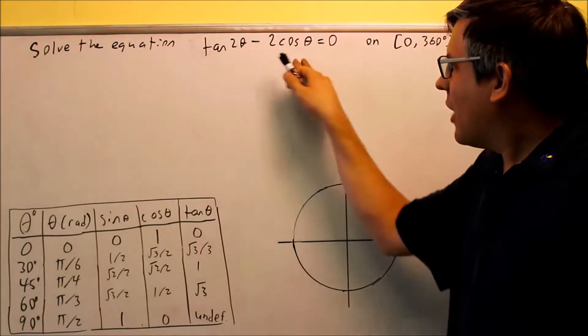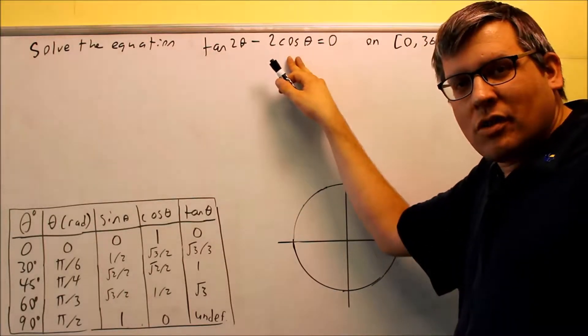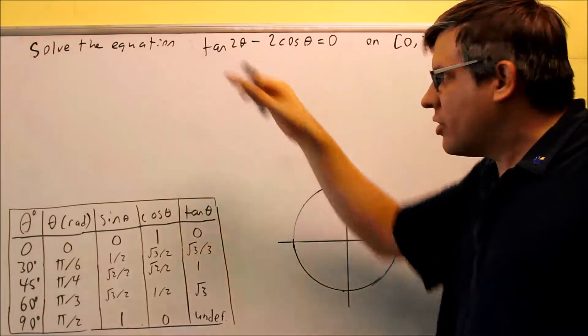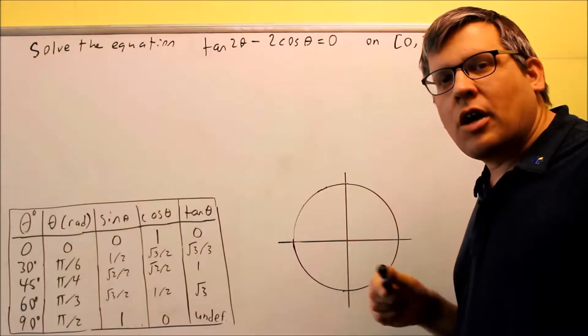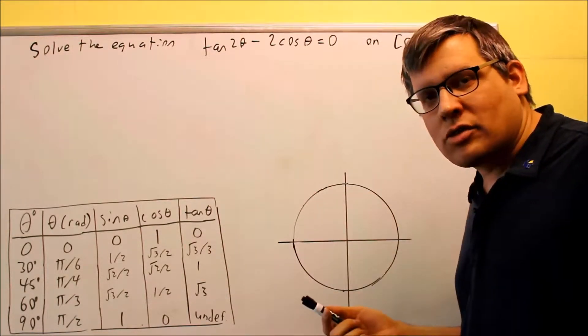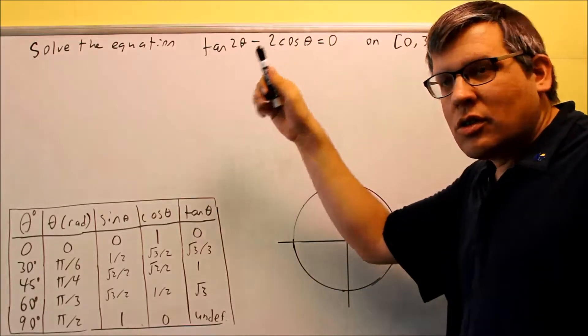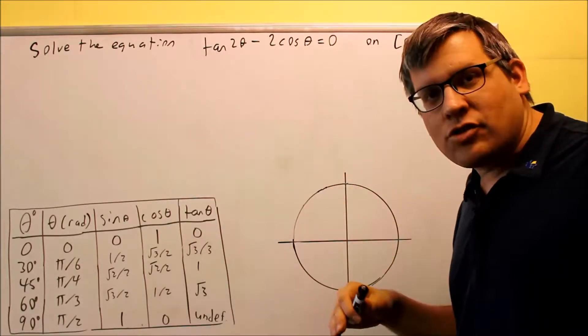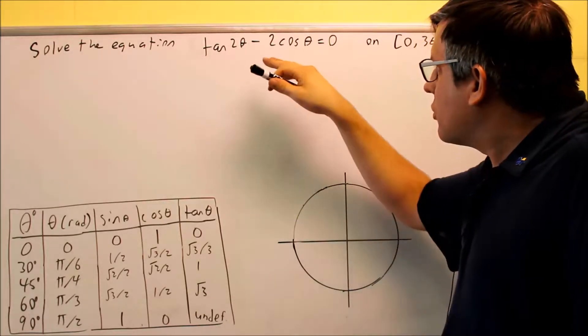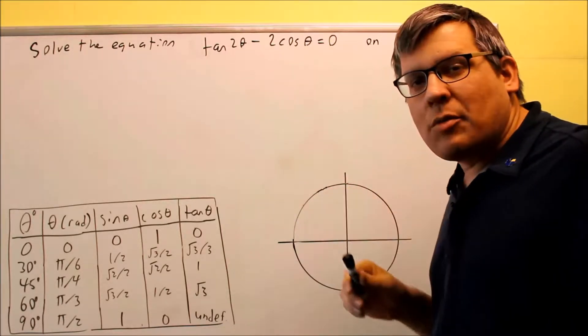Okay, for this problem I have two different trig functions, so I want to use an identity. Now there is an identity for tangent 2 theta we talked about in that section with double angles and half angles, however, that involves a fraction on top or a fraction on the bottom and I have all tangents, which are not really going to help me too much in this case because I want to get common denominators.